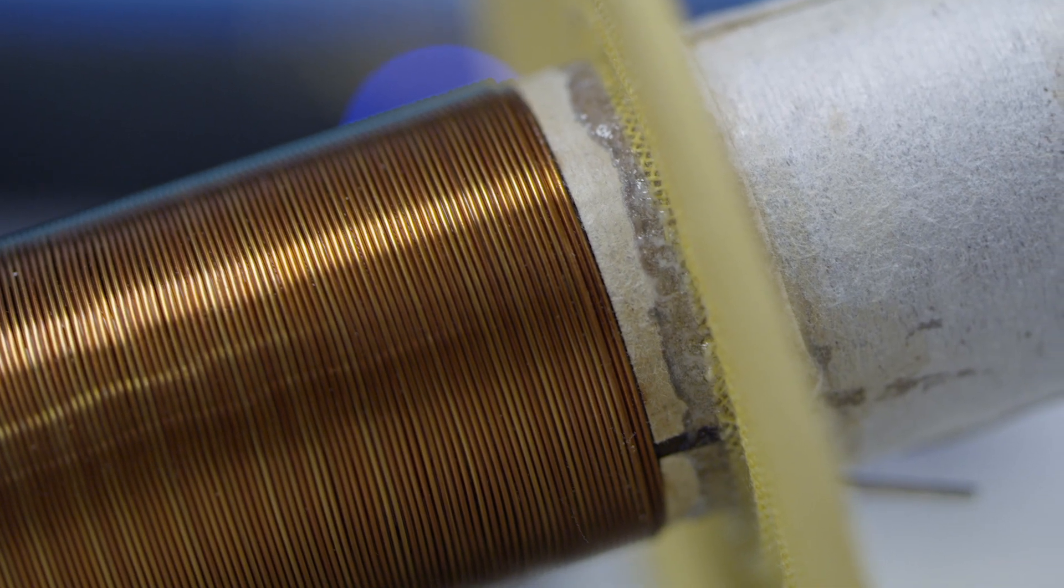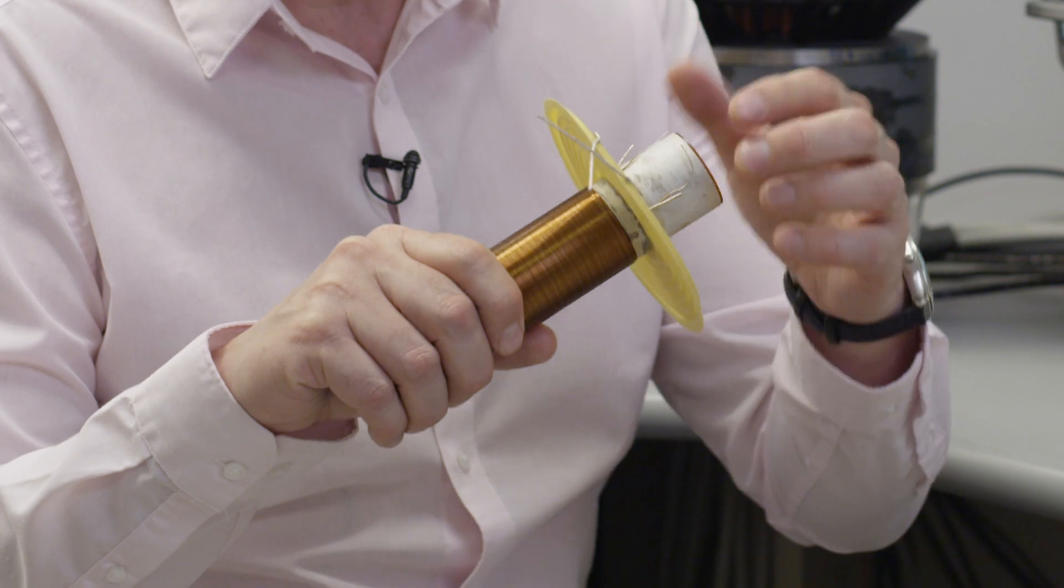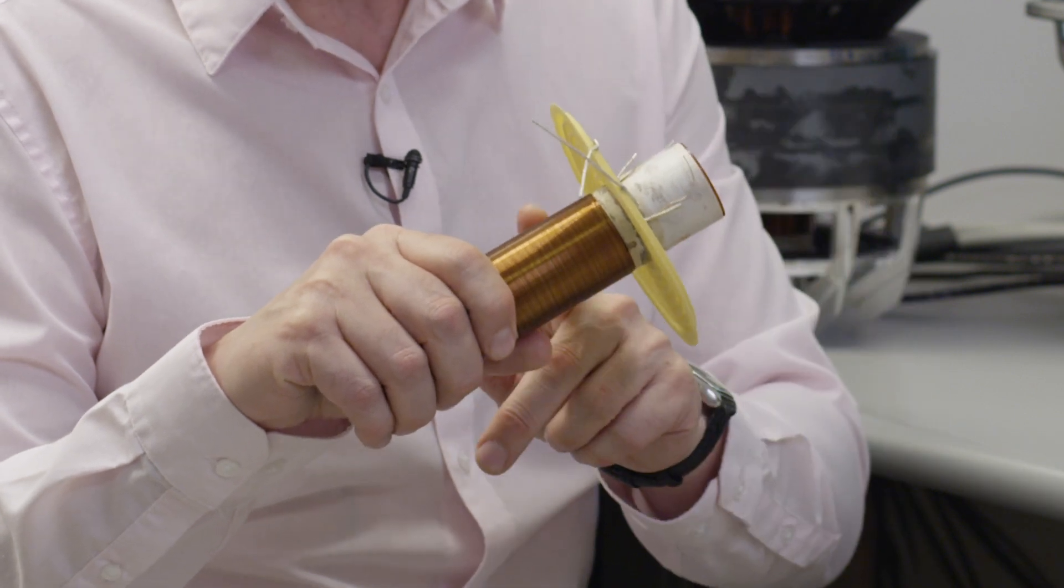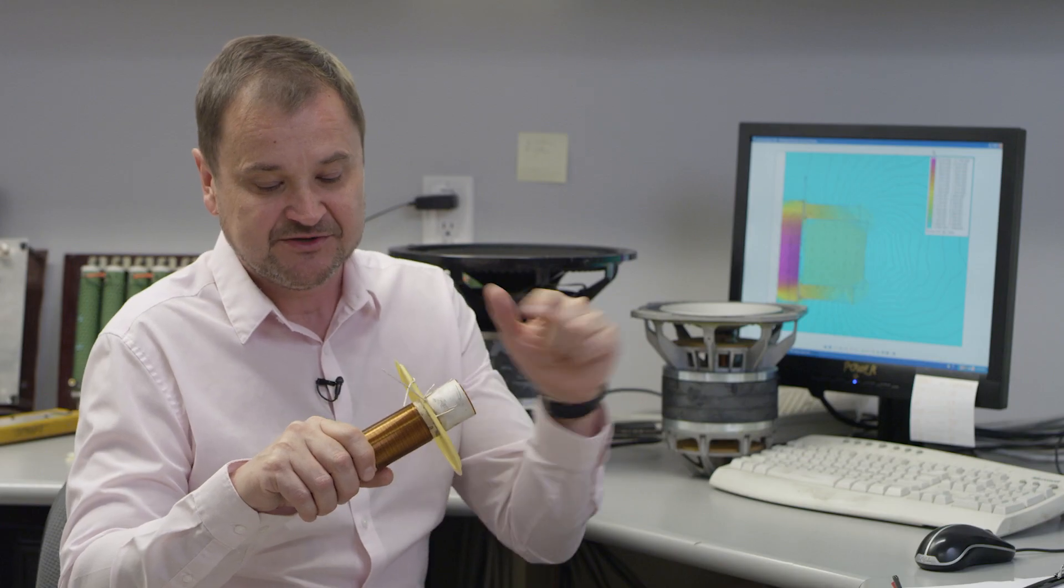So why bother with two voice coils? Well, with a single voice coil, when it's energized by the current that goes through it, it creates a magnetic field, either in this direction or this direction. And that magnetic field can either add or subtract to the magnetic field of the permanent magnet.